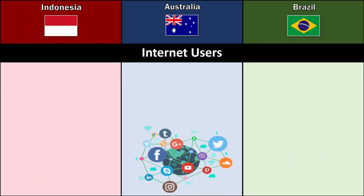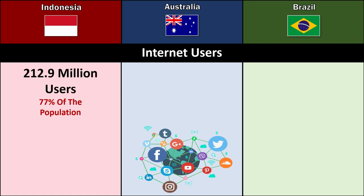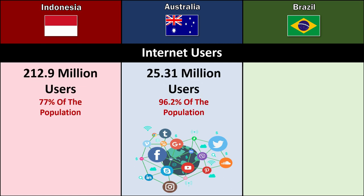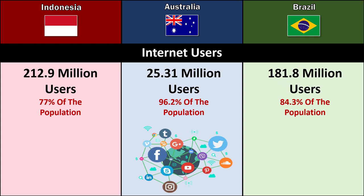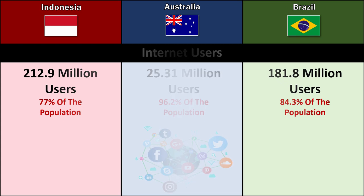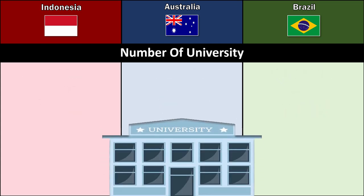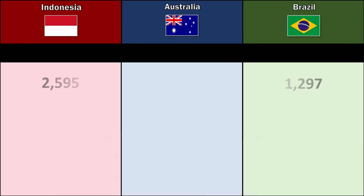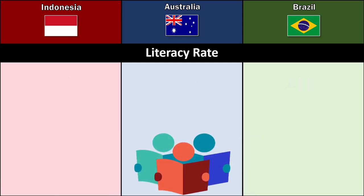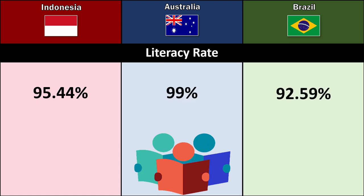Internet Users: Indonesia 212.9 million, Australia 25.31 million, Brazil 181.8 million. Number of Universities: Indonesia 2,595, Australia 190, Brazil 1,297. Literacy Rate: Indonesia 95.44%, Australia 99%, Brazil 92.59%.